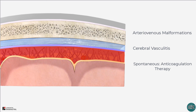So that completes this tutorial looking at the clinical anatomy of subarachnoid haemorrhage. For more detailed anatomy tutorials on these relevant topics, you can check out my tutorials on the meninges of the brain and the circle of Willis.